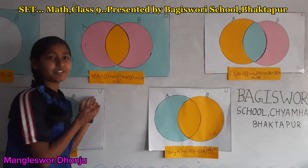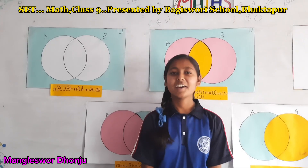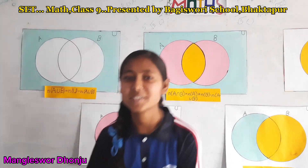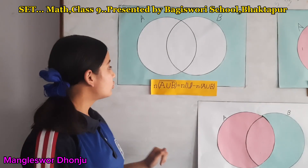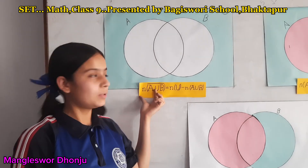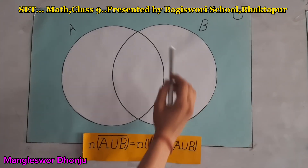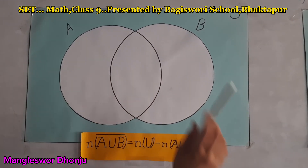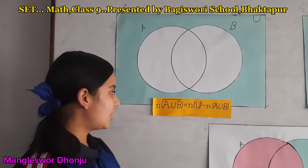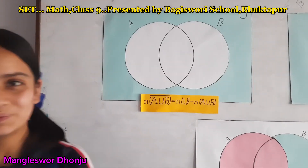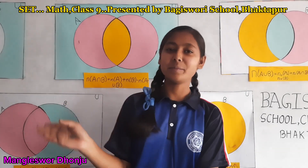Thank you for the description of A intersection B formula. Now for A union B complement, I'm inviting my friend Anupama for this description. This is the set diagram of A union B complement. To find A union B complement, we have to subtract the A union B from the universal set N(U). When you subtract A union B from N(U), we get A union B complement. Thank you, Anupama.